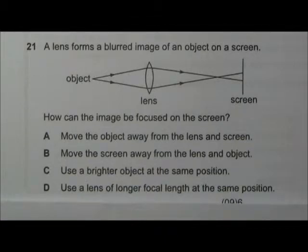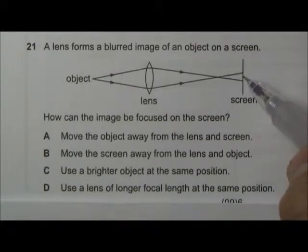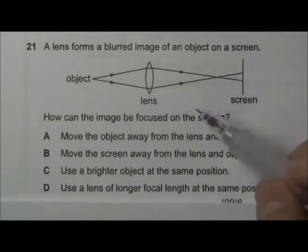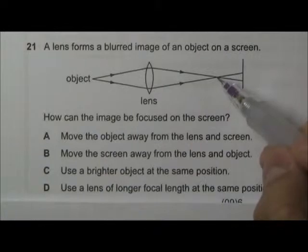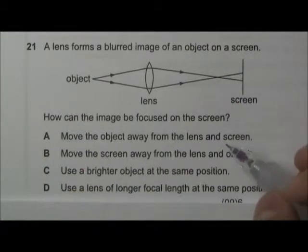Okay, in this question, we have a blurred image formed because the image is formed here and the screen is here. So the screen does not really capture the image. So what can we do to focus the image on the screen? That means we have to make sure that the light rays converge or intersect each other at the screen. Okay, let's look at the four options.